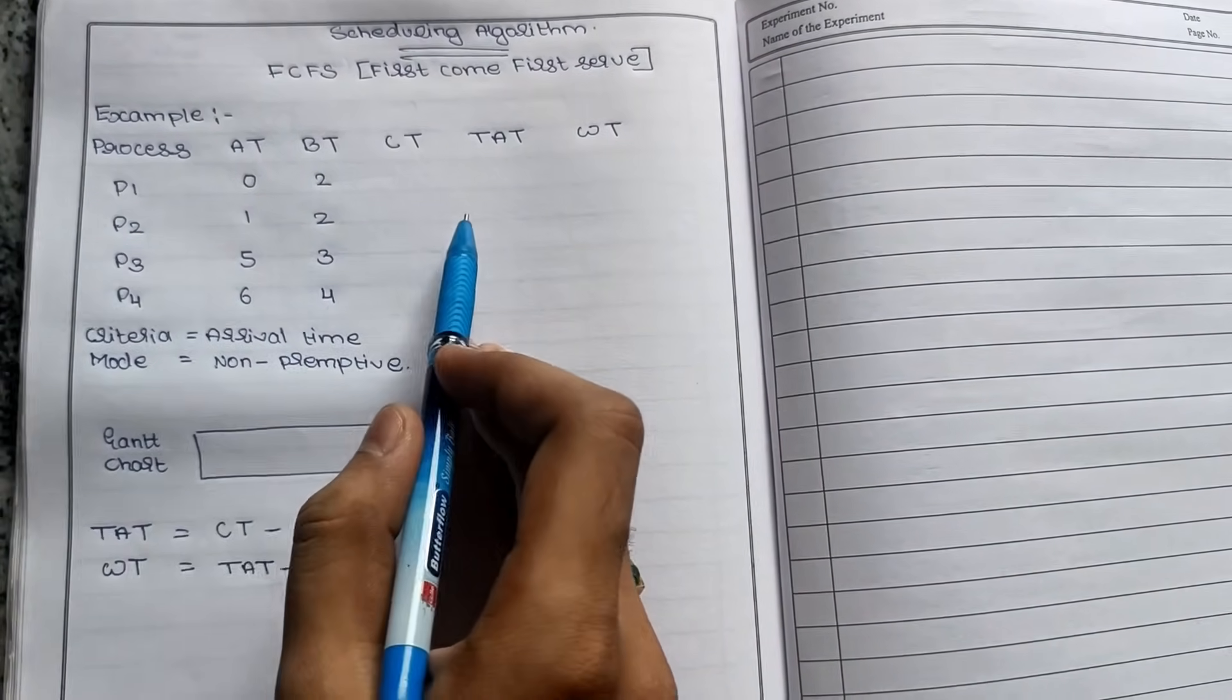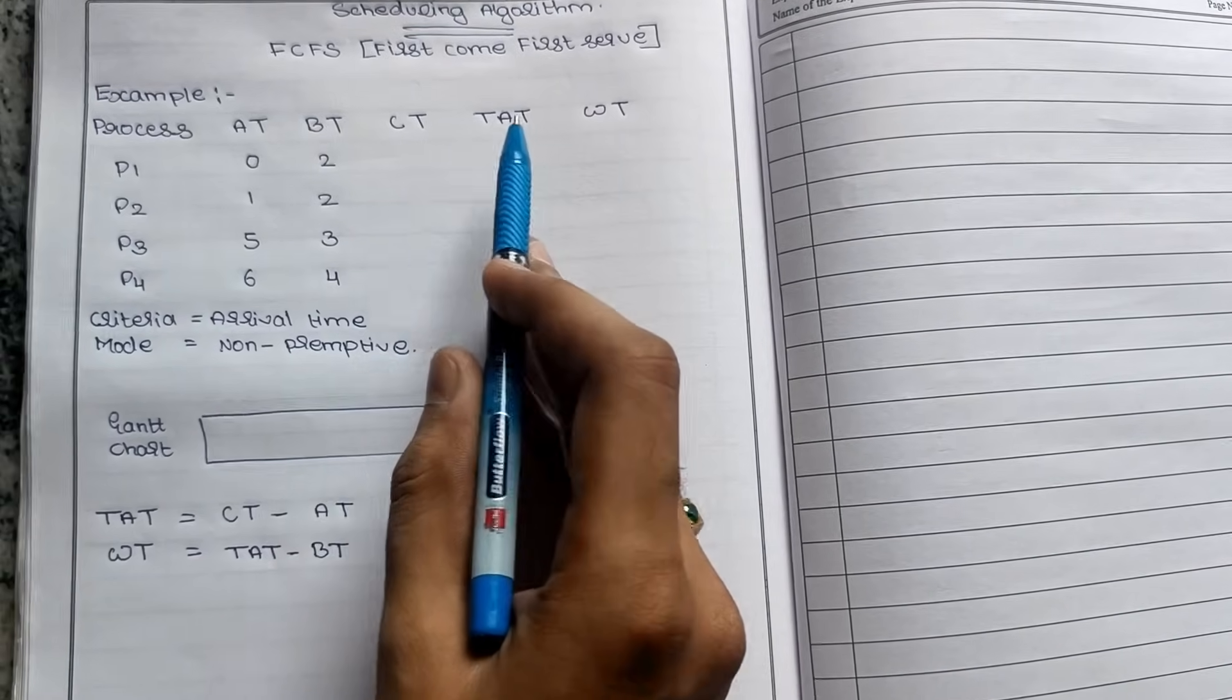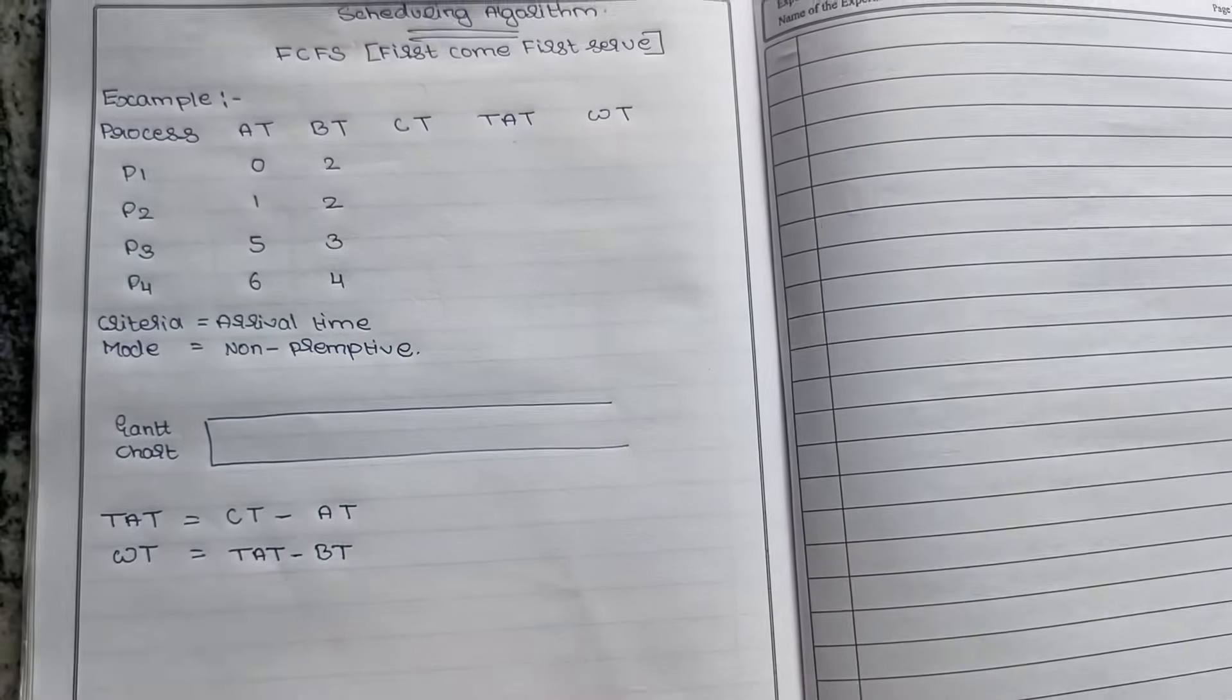I am using processes P1, P2, P3, and P4. As usual, we have Arrival Time, Burst Time, Completion Time, TAT (Turnaround Time), and Waiting Time.